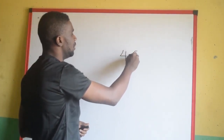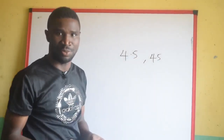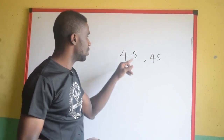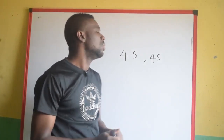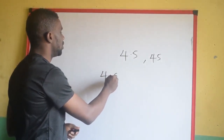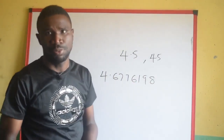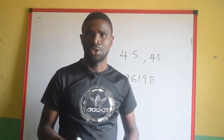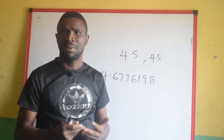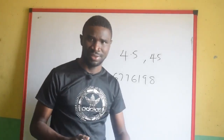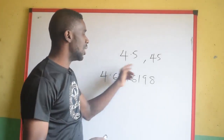If I give you something like 4.5, this is a decimal. If I give you 45, that is not a decimal. What makes 4.5 a decimal is because of this point, and the point is called the decimal point. So imagine when you are given 4.6776198 — this number is too much. Your teacher might not really be interested in seeing all of this. As a result of that, mathematicians decided to come up with approximation.